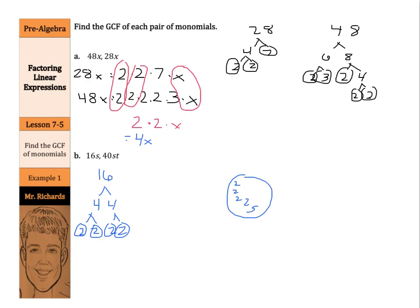Now, what about my 40? Well, 40 can be 5 times 8, and 8 can be 2 times 4, and 4 is 2 times 2. Using the Venn diagram method, I put my factors of 16 on the left, and now I'm going to put my factors of 40 on the right side with 2, 2, 2, and 5.